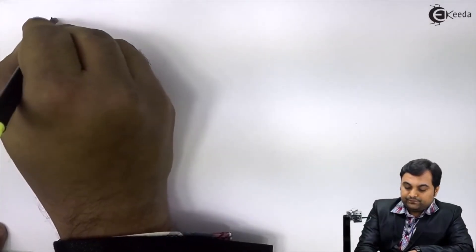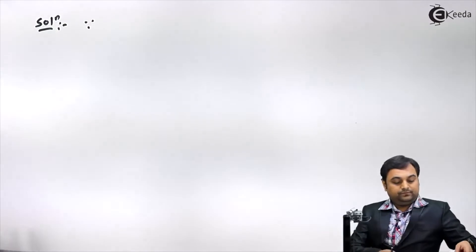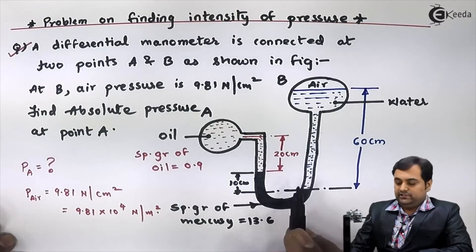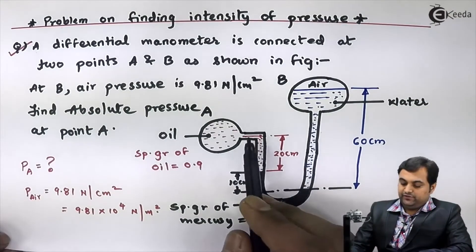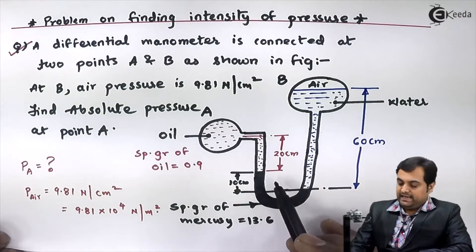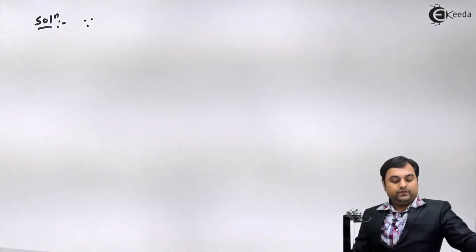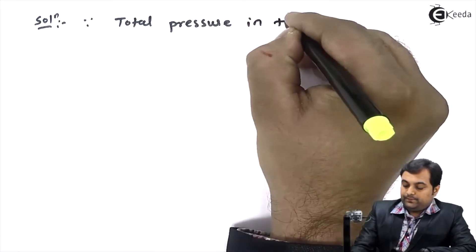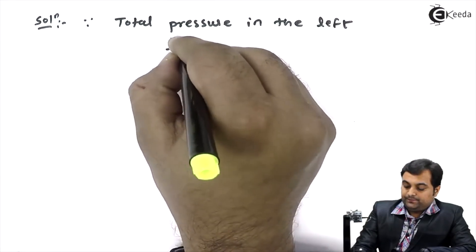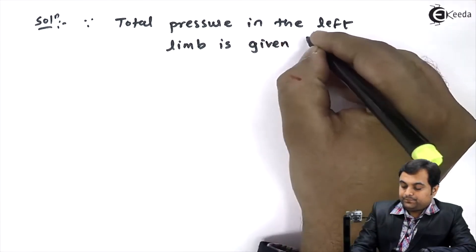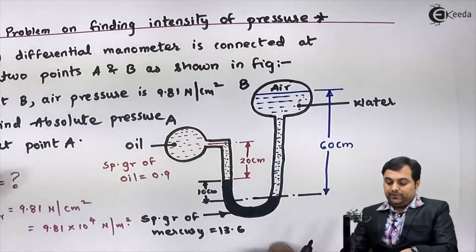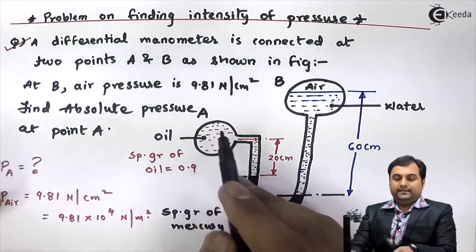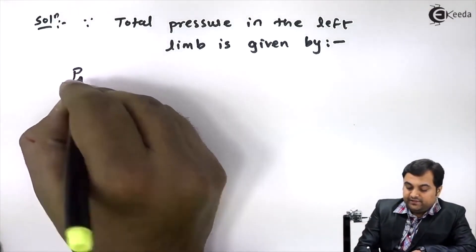Now we write the solution. For a differential U-tube manometer, we balance or equate both sides — that is, we equate the left limb and the right limb. This is the pressure equation. In the left limb we have oil as well as mercury, so the total pressure starts with the pressure of oil in pipeline A, indicated as P_A.